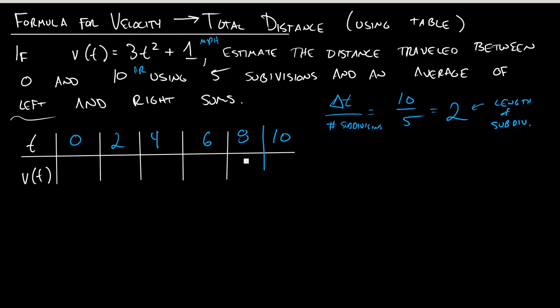And then on this bottom row, I want to list my velocity each of those times. So you can see kind of the general idea of what we're doing is they give us a formula. And we're going to make a table to help us estimate this. So my table is going to fill out as 1. Again, I'm plugging these t's into my formula up here.